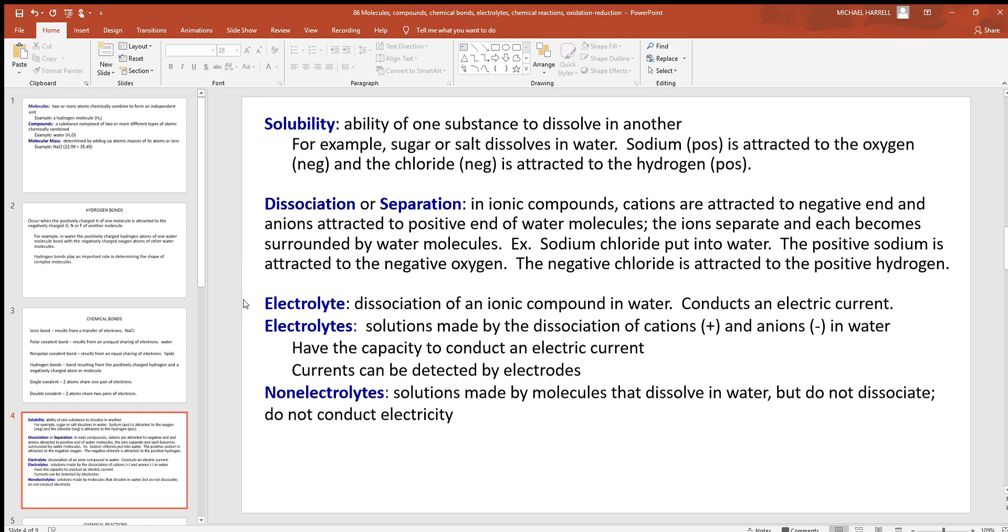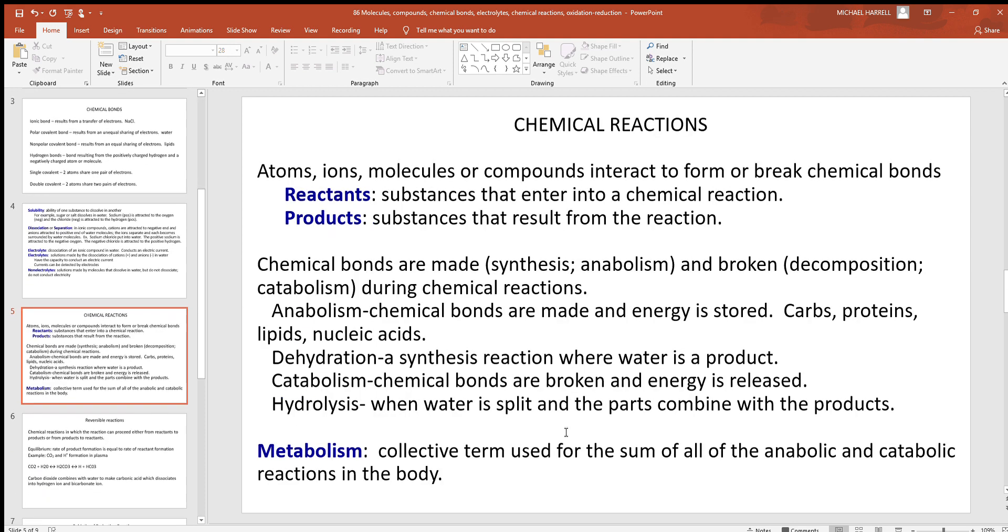Since our body is full of water and ions, we're very good conductors of electric current. So that current can go from that wire through our body and into our friend if you were to do that. Electrolytes again are solutions made by the dissociation of those positive and negative ions. Remember all those that are positive are called cations. Those that are negative are anions. Put them in water and electrolyte is what you have. Non-electrolytes are solutions made by molecules that dissolve in water but do not dissociate. Things like lipids won't dissociate. That's why they're good insulators of electric current.